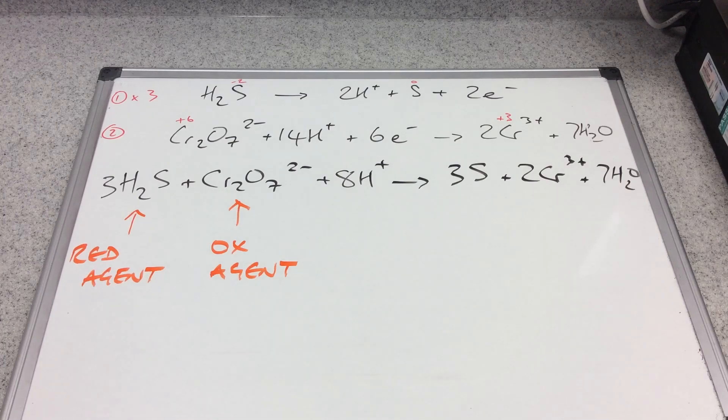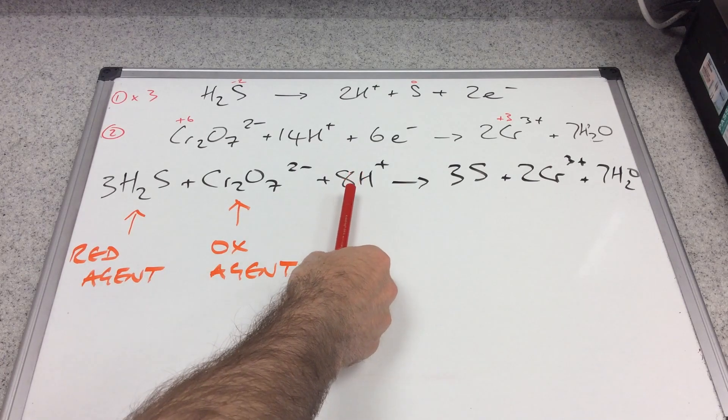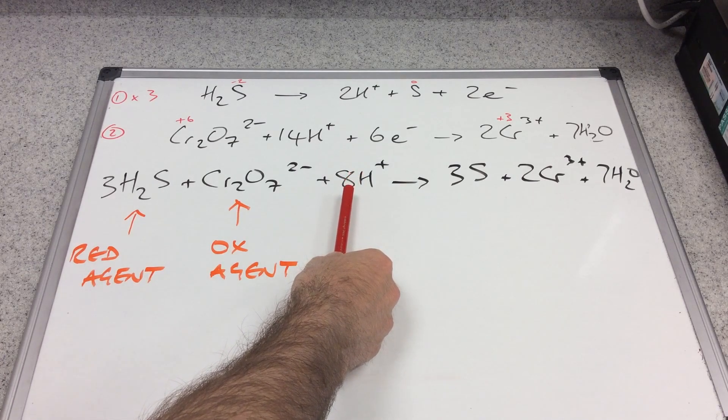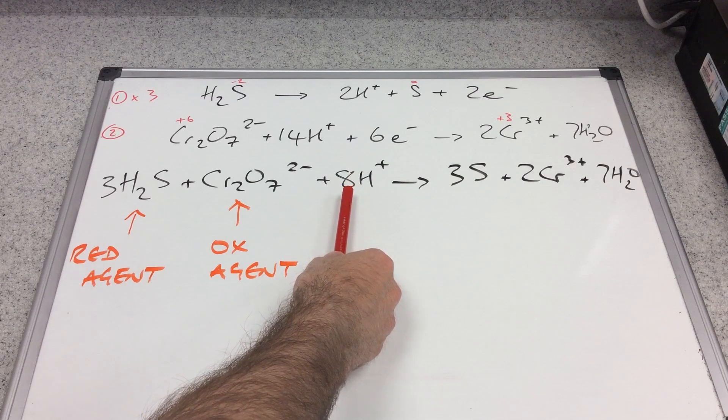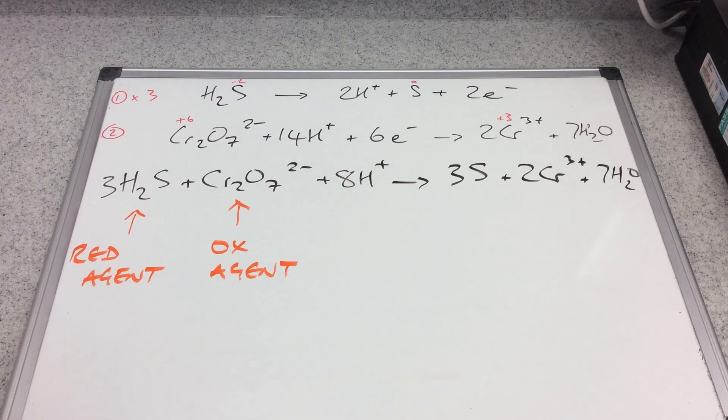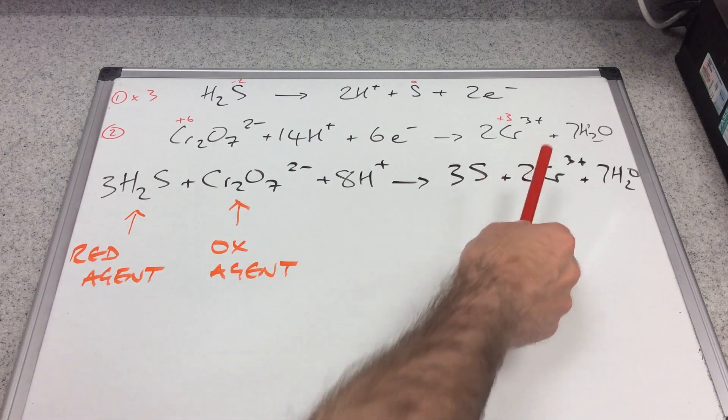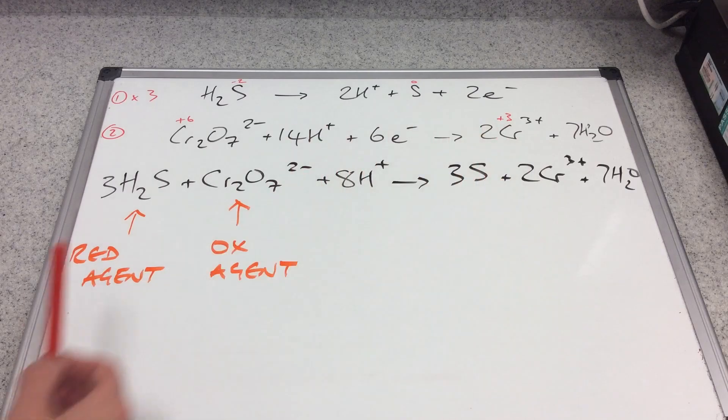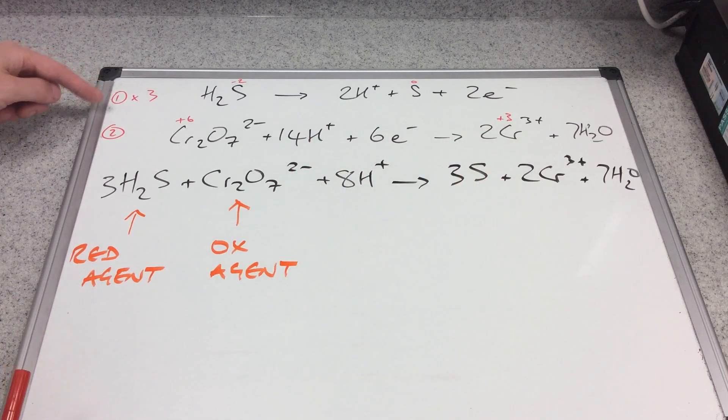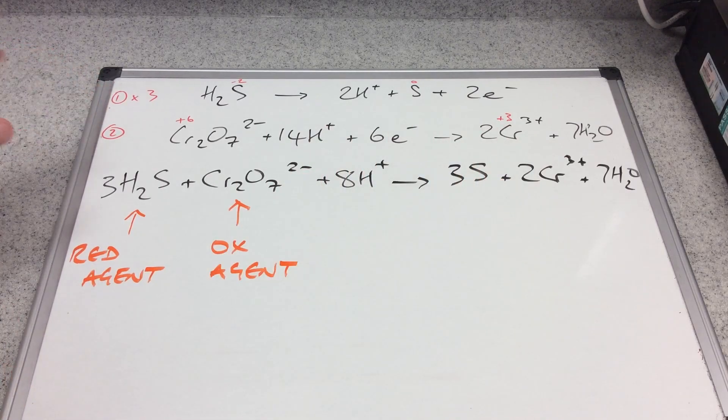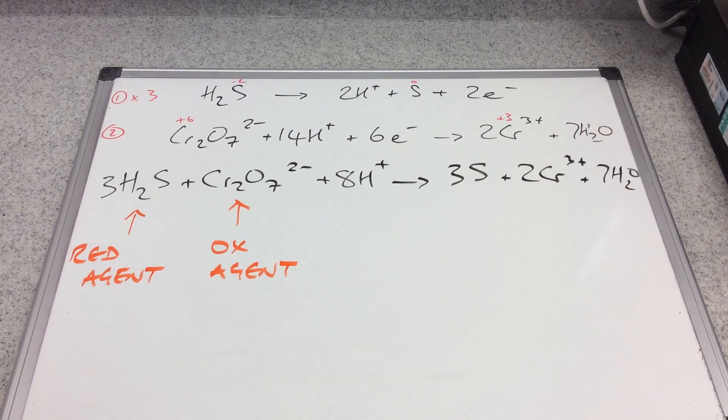If you remember what I said earlier about the hydrogen ions having to be cancelled down, the same goes for water as well. Sometimes you might see H2O on either side when you combine the two half equations together, and again the rule applies - you must give the overall redox equation in its simplest form. If you have got water either side, please make sure you cancel that down, just like we did with the hydrogen ion.